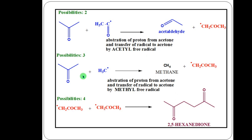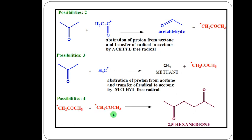Another possibility: the methyl radical can also react with acetone. The methyl radical abstracts a proton from acetone and transfers the radical to the acetone molecule, giving methane as the product and a new acetone-derived radical. This reaction can also end up with another termination type of reaction - dimerization of these two radicals - giving 2,5-hexanedione as a product.